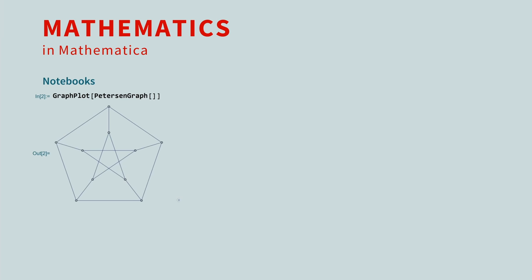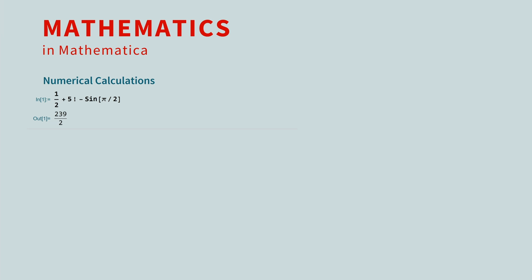Let's begin by performing some numerical calculations. Let's ask Mathematica to calculate 1 half plus 5 factorial minus sine of pi over 2. There are several things I'd like to point out in this calculation. First, the result is exact. Mathematica does not convert fractions to rounded-off decimals. It treats them with infinite precision.